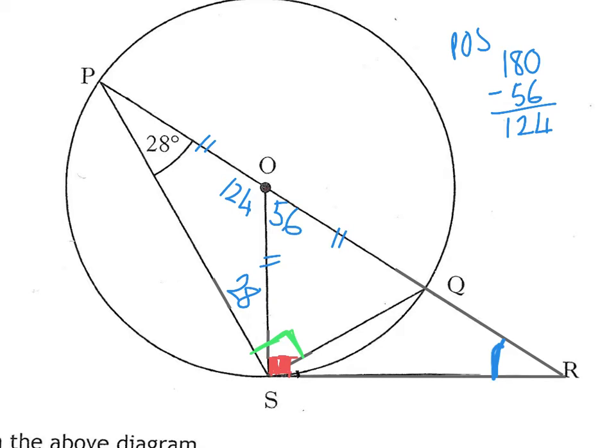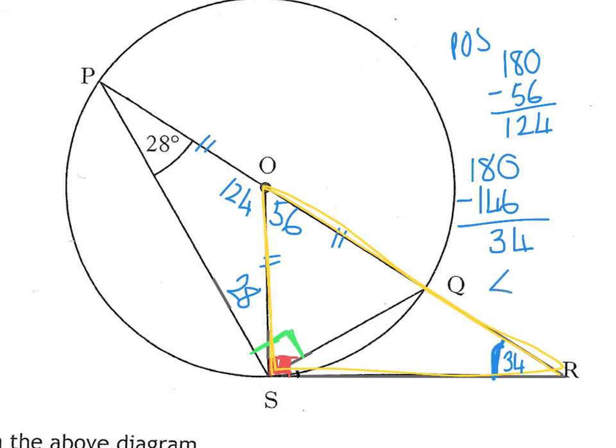So this is for angle POS. So this is 124. That's on a straight line with 180, so that one makes that 56. I actually have enough information to get the angle R now. If I just focus on this triangle here in yellow, I've got enough information. I've got 56 plus 90 is 146. My missing angle is 180 take away 146, which is 34. So the missing angle is 34.